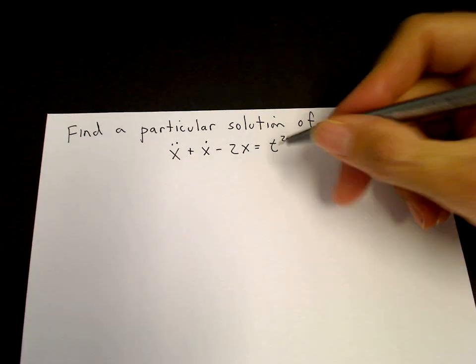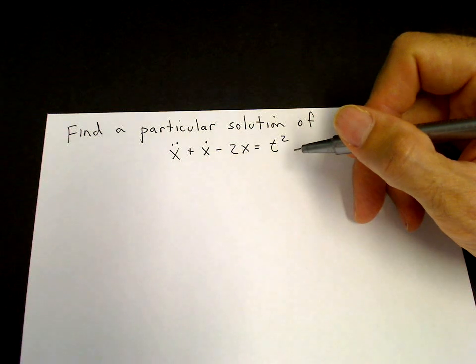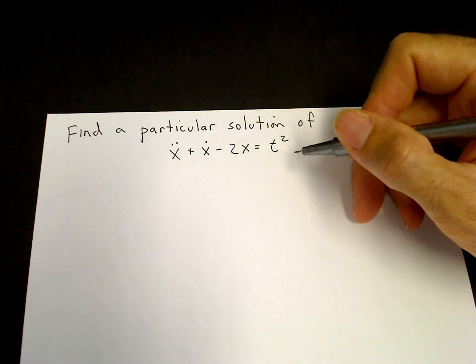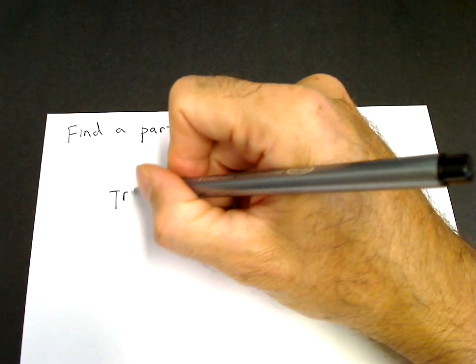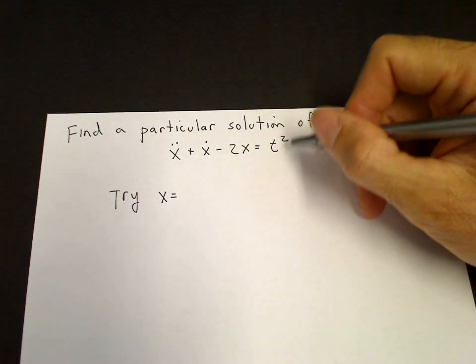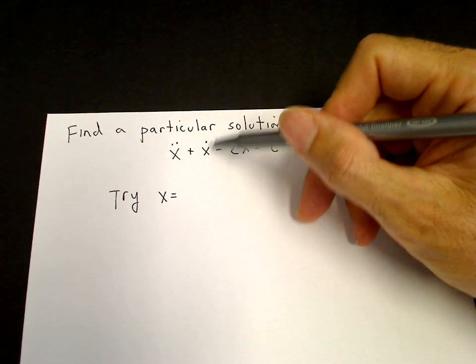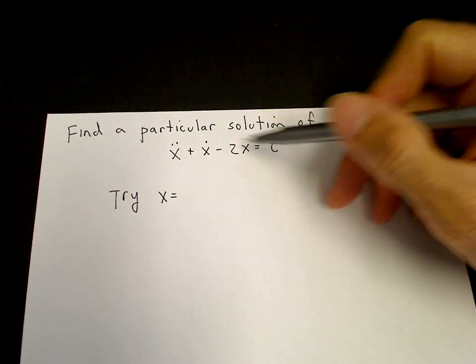Here the polynomial is t squared and we need to find an ansatz to find the particular solution. If we just try t squared, the problem is that the left hand side will give us a t and a constant term.